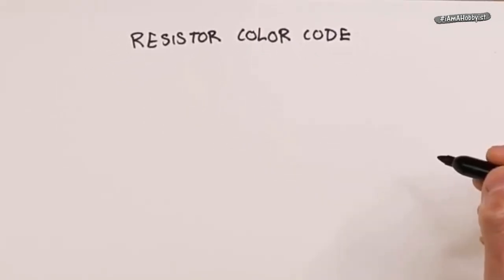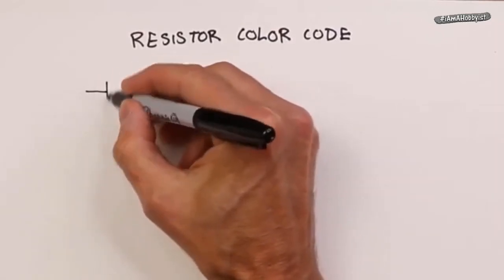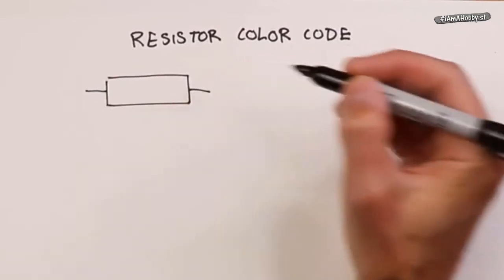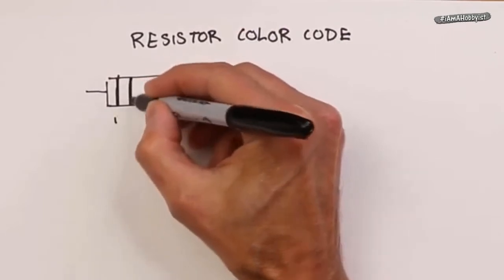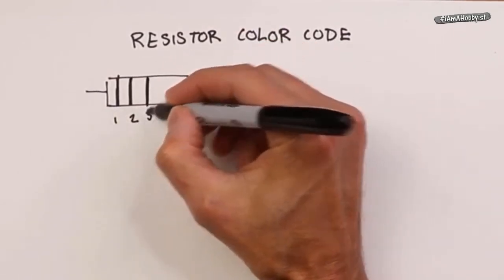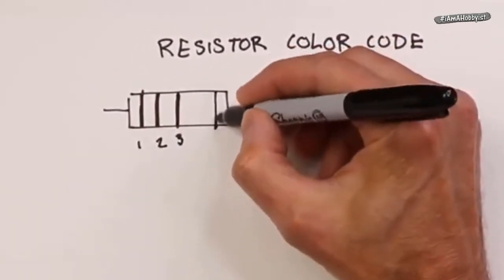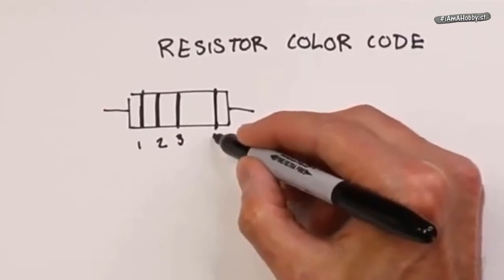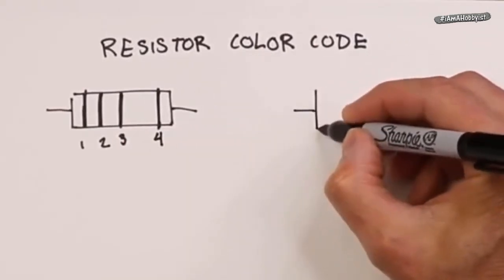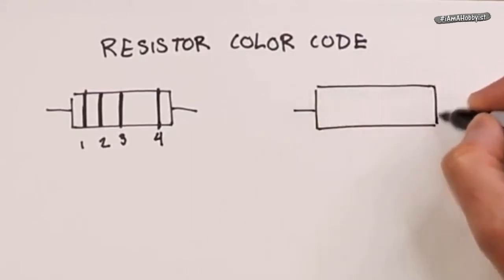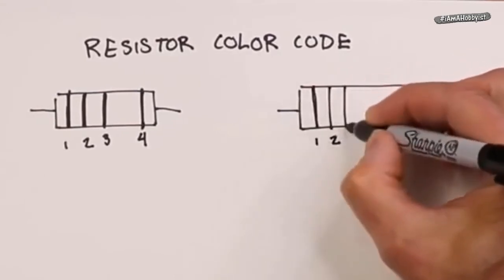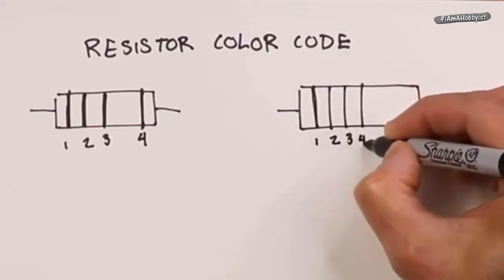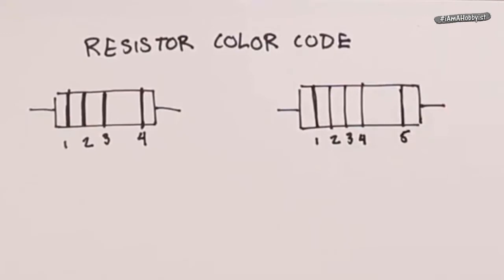The standard color code is either a 3 or 4 band color code. If you look at a simple resistor with two leads, you would have band number 1, band number 2, band number 3 nice and close, and then possibly another band all by itself over here. You might have, for a higher precision resistor, four bands tied together over here and a 5th band out there.